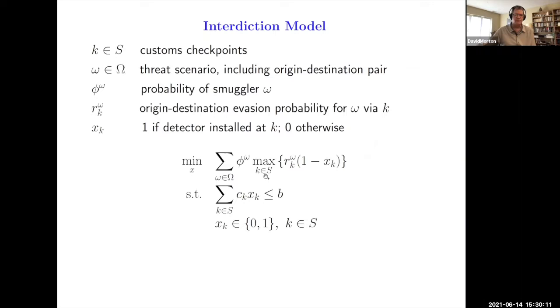X_K is yes/no, do we install a detector at a border crossing? There's a knapsack constraint. The smuggler's optimization problem is embedded in this max over K and S. The smuggler knows his origin-destination pair, and then his max over K and S is his evasion probability. If X_K is zero, he gets that reliability. If X_K is one, because the detectors are perfectly reliable, that drops to zero for that particular border crossing. Here, the interdictor is trying to minimize the overall unconditional evasion probability.